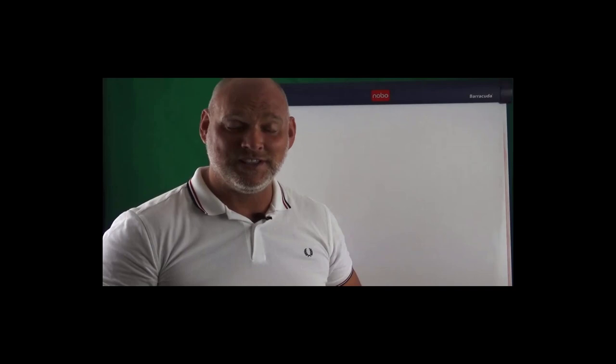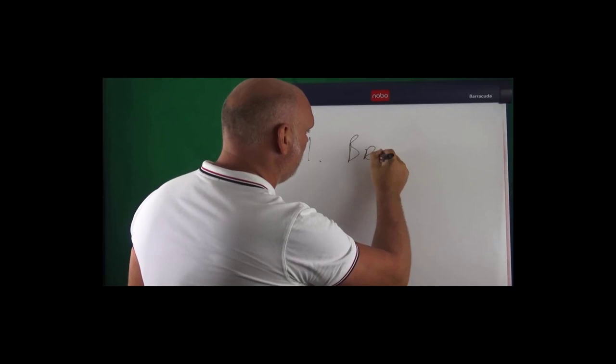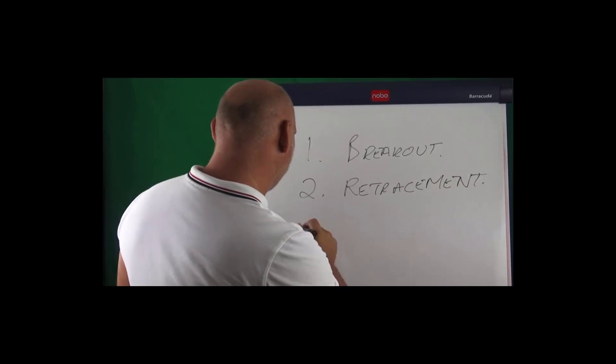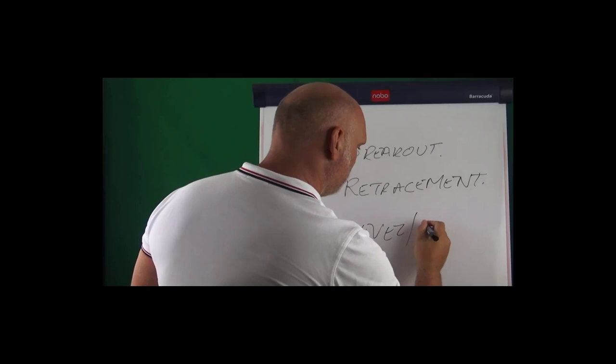Hello and welcome to this training about iceberg orders. It's important that we first start off with understanding what the three core major disciplines are. Number one we've got breakout traders. Number two we've got retracement traders — your pullbacks, your Fibonacci people. And then number three we've got level traders, also known as supply and demand traders.